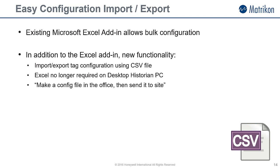Previously, Matricon gave you a Microsoft add-in menu item that allowed Desktop Historian to be configured in Microsoft Excel. Although a great feature that is still present in version 5.1, the downside was that you needed Excel to be installed on the Desktop Historian PC to utilize this. There is now, in addition to the existing functionality, a CSV import-export facility. This allows you to bulk input tags to be archived into Desktop Historian using a simple comma-separated value file. You can now create the configuration ahead of time and ship it to site with the installer.